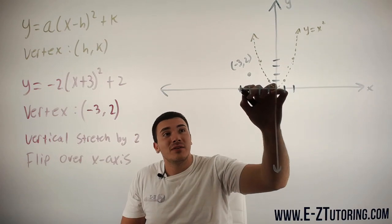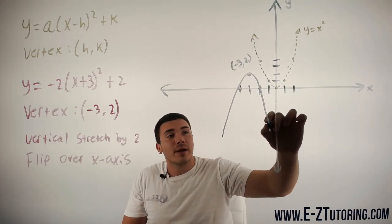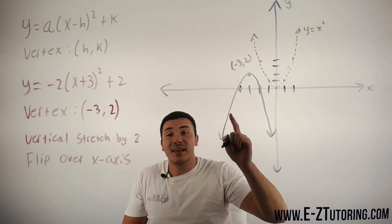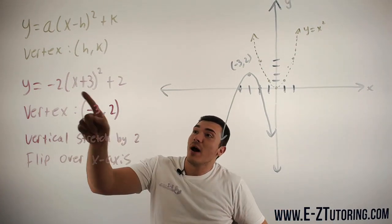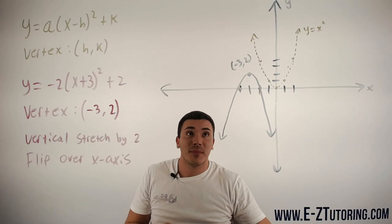And from here, you can go ahead and graph your parabola. And this is the graph of y equals negative 2 times x plus 3 squared plus 2.